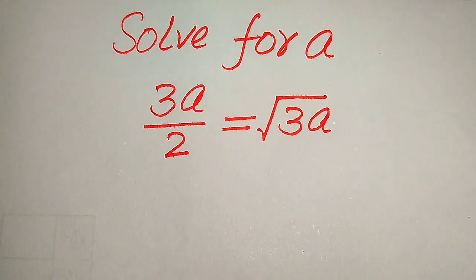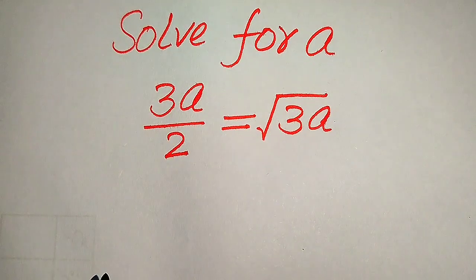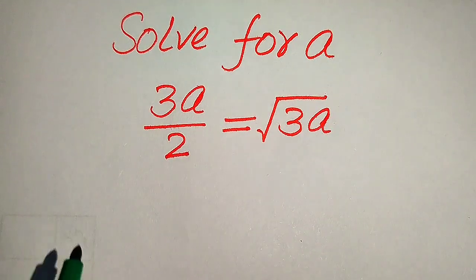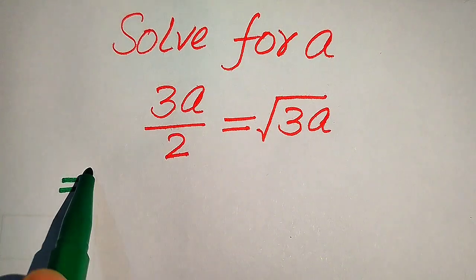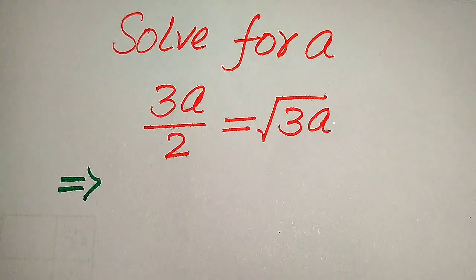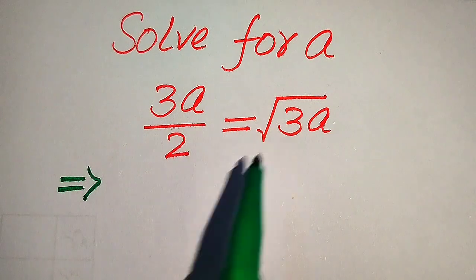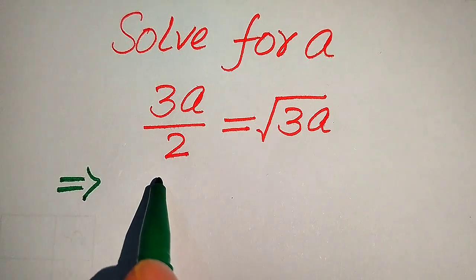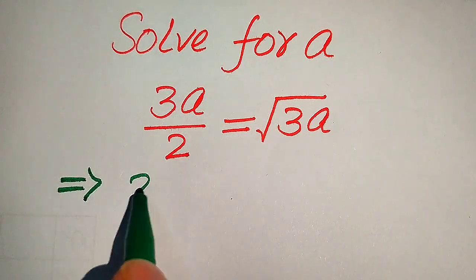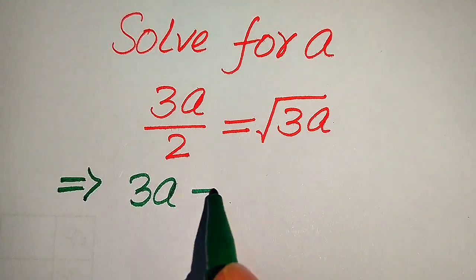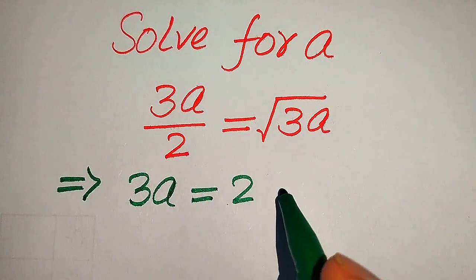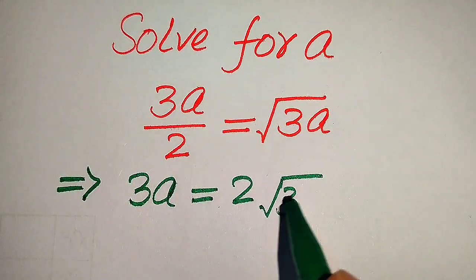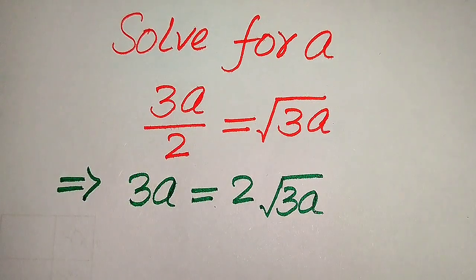The very first thing we are going to do is rewrite this equation. First we move this 2 to the right hand side, and it will be written as 3 times of a equals 2 times of the square root of 3a.